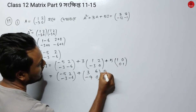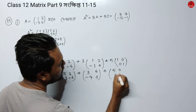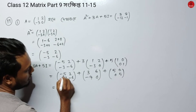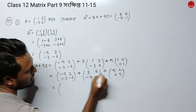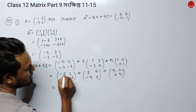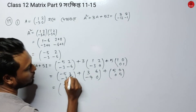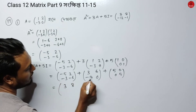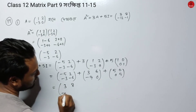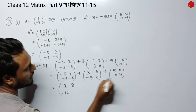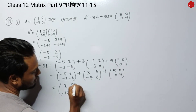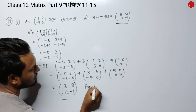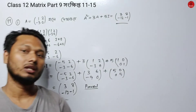Adding A² + 3A + 5I: combining the entries we get the final result matrix. The zeros from the identity matrix complete the calculation.